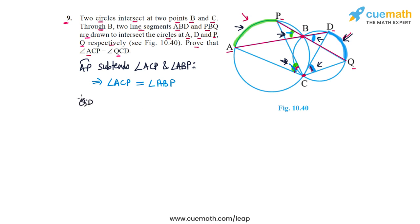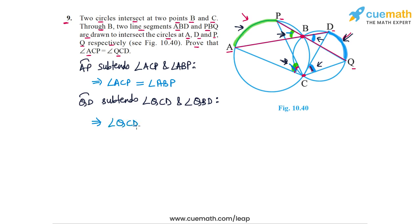In the other circle, arc QD — this arc here — subtends angle QCD and angle QBD at the circumference. This means that these two angles must also be equal, so angle QCD is equal to angle QBD.